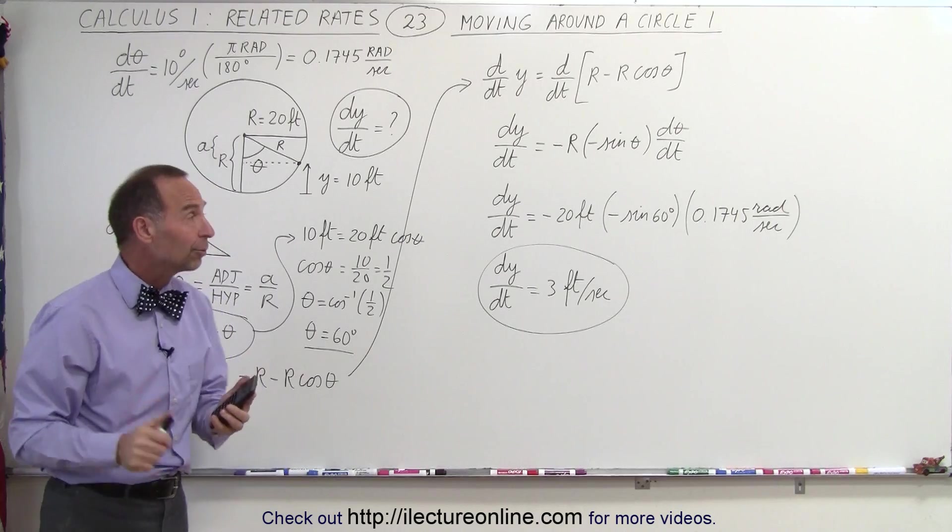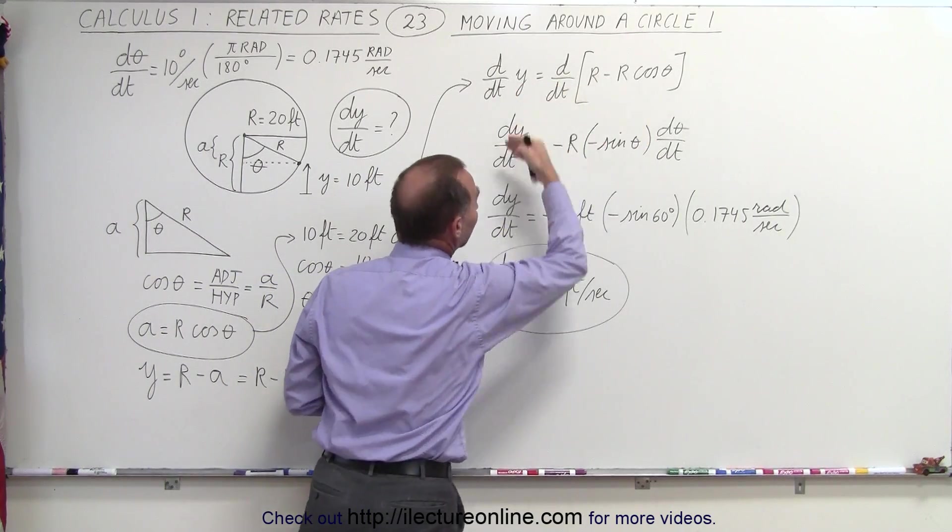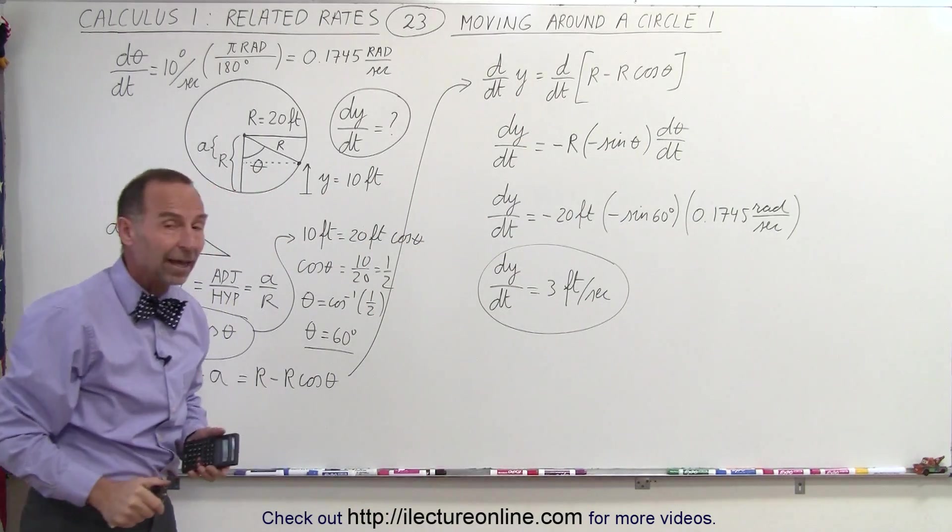So notice, as long as we find the right relationship between y, r, and theta, we can take derivative of both sides and come up with the answer. And that's how it's done.